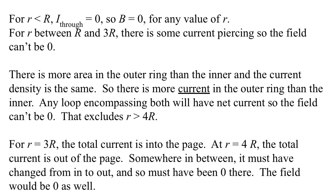Between the inner radius r and the outer cylinder's inner radius, the Amperean loop will capture some net current, so there will be some magnetic field no matter where we are — the integral always has some value, so this region is out. Similarly, between 2R and 3R (inside the outer conductor's material), there's again some net current piercing, so some net field — that one's also out.